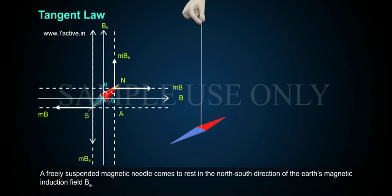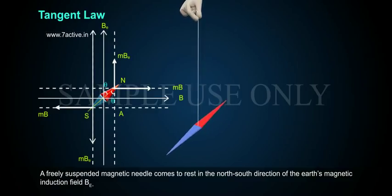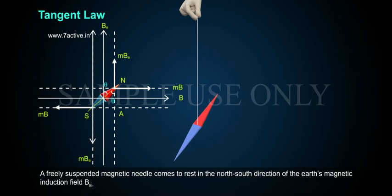Tangent law. A freely suspended magnetic needle comes to rest in the north-south direction of Earth's magnetic induction field, BE.